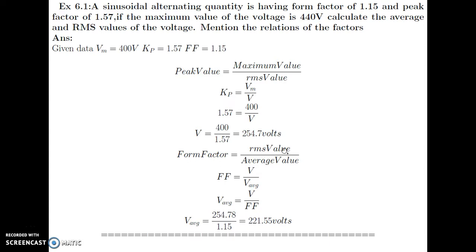Form factor is equal to RMS value upon average value, so FF equals V upon V-average. Therefore, V-average equals V divided by form factor, which is 254.78 divided by 1.15. This gives 221.55 Volts as the average value.